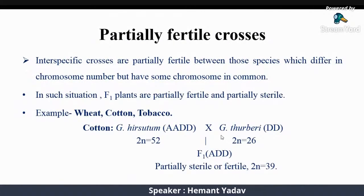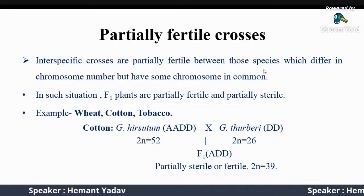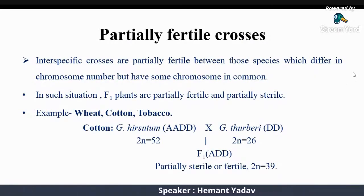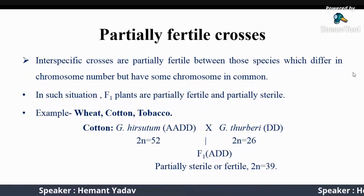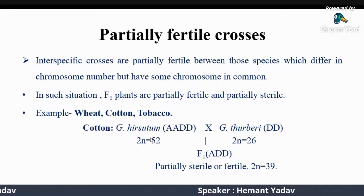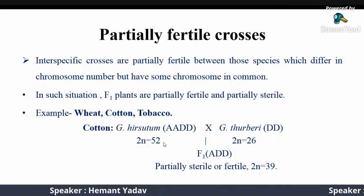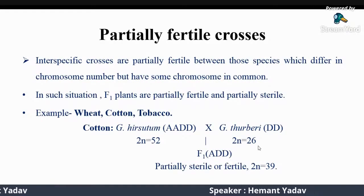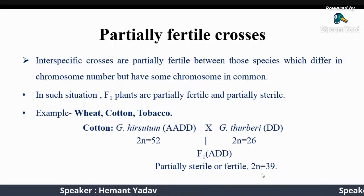Partially fertile hybrids are between those species which differ in chromosome number but have some chromosomes in common. In such situations, F1 plants are partially fertile and partially sterile. For example, in cotton, when Gossypium hirsutum, which is a tetraploid species, is crossed with Gossypium thurberi, which is a diploid species, a partially sterile F1 hybrid is produced which has chromosome number 39.